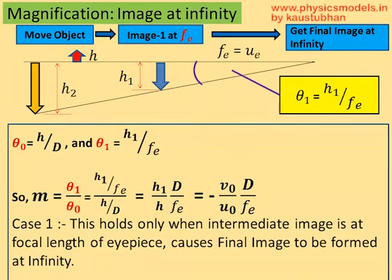So, if it's in radians, then tan theta 1 is equal to theta 1 equal to H1 by Fe. Then, if the object is placed at the near point of the eye, then tan theta 0 equal to theta 0 equal to H by D. And dividing M equal to theta 1 by theta 0, we get finally the equation for the angular magnification.